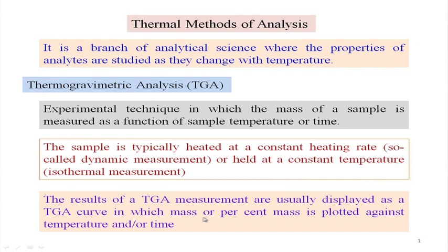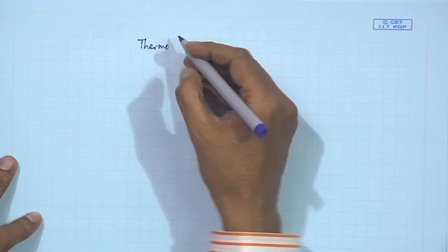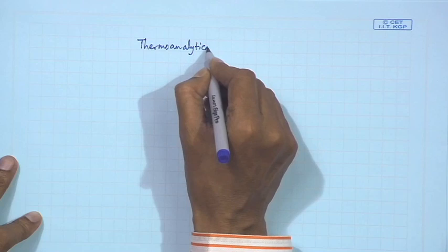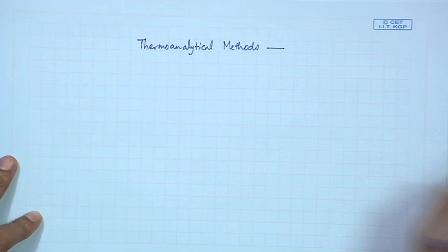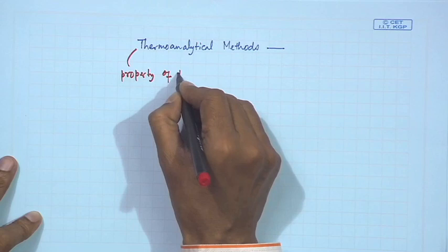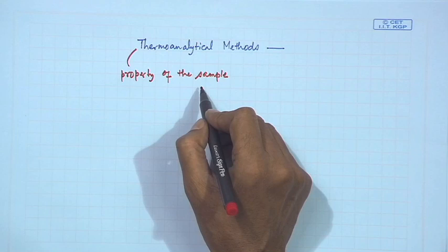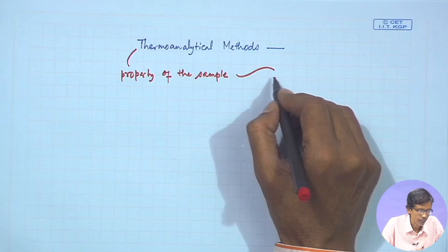The TGA curve plots mass or percent mass against temperature or time, since temperature is synchronized with time. This particular process can also be called a thermo-analytical method. There are different thermo-analytical methods — we monitor the property of the sample, and sometimes we can also monitor the temperature change itself, because a temperature change can happen when a chemical reaction occurs.